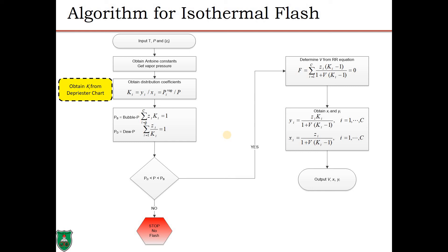The algorithm for isothermal flash is as follows: given the temperature, pressure, and feed mole fractions, identify the components and retrieve Antoine constants. Evaluate the vapor pressures using the temperature and Antoine constants, then calculate the distribution coefficients Ki = Pi_sat / P using Raoult's law. Carry out bubble and dew point pressure calculations to confirm the system pressure is bracketed. If it is, solve the Rachford-Rice equation for the given conditions.